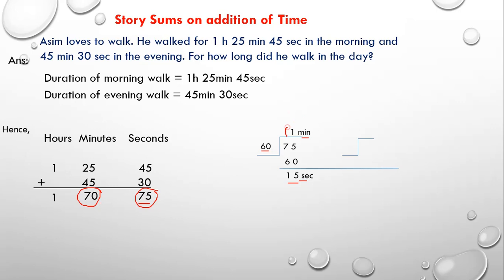But, already we got this 1 minute. If I add this 1 minute to 70, 70 became 71. So, this is what I wrote here as 71. How I got this 71 means, this 70 plus 1 minute became 71 minutes.